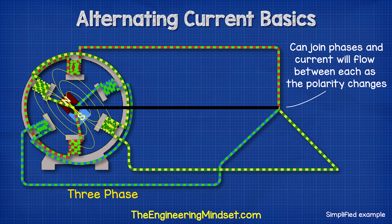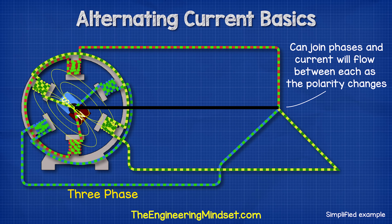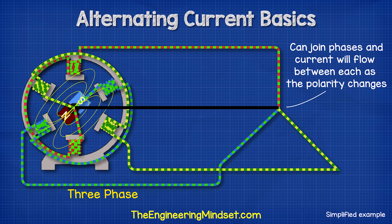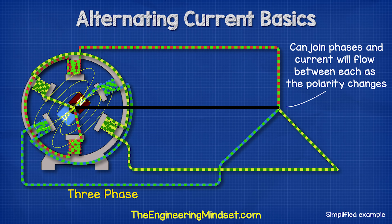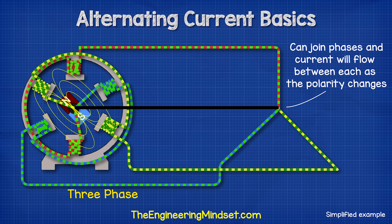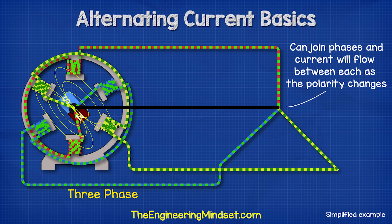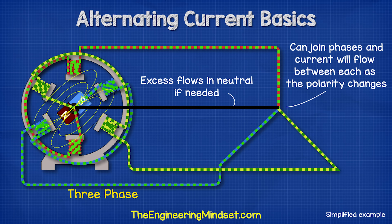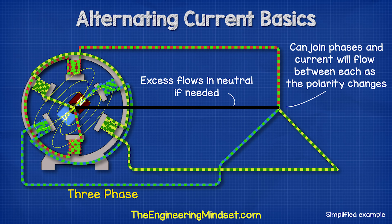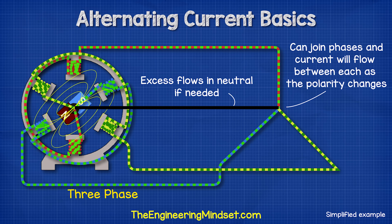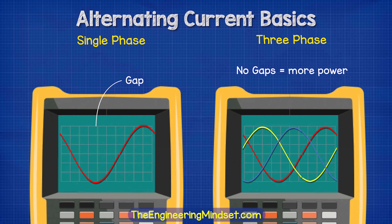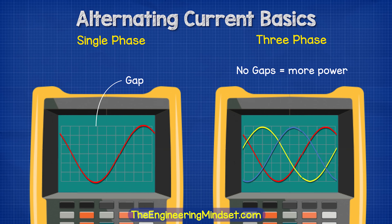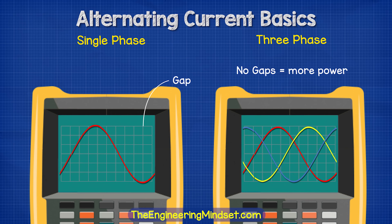Remember, electricity wants to get back to its source in a complete circuit, as the current is flowing forwards and backwards at different times in each of the phases. We can essentially connect the phases together, and the current will move between the different phases as the polarity of each phase moves forwards and backwards at different times. Any excess will flow in the neutral back to the source if needed, but that's only if the load on any of the phases is unbalanced. With single phase, we have large gaps between the peaks, but with three phase, these can be combined to fill in the gaps and therefore deliver more power.